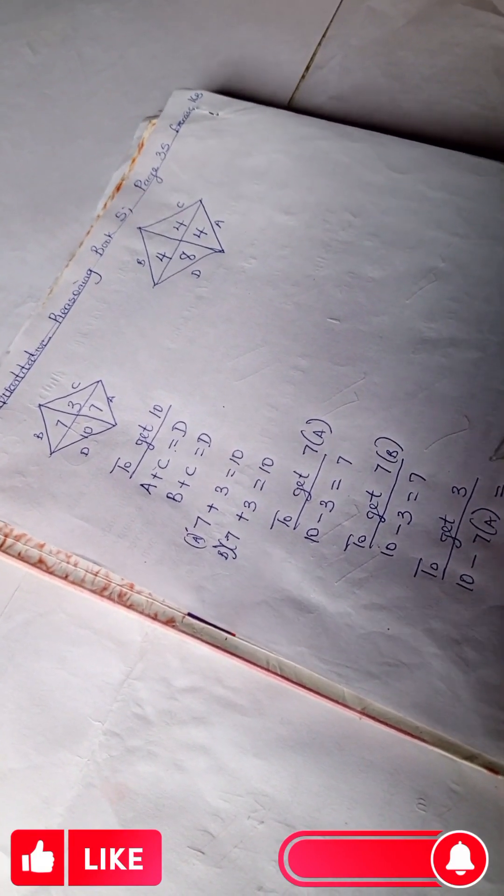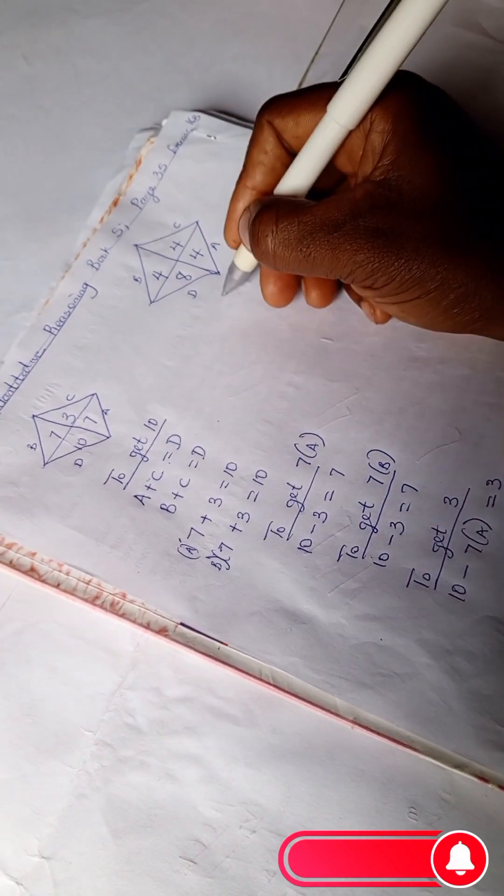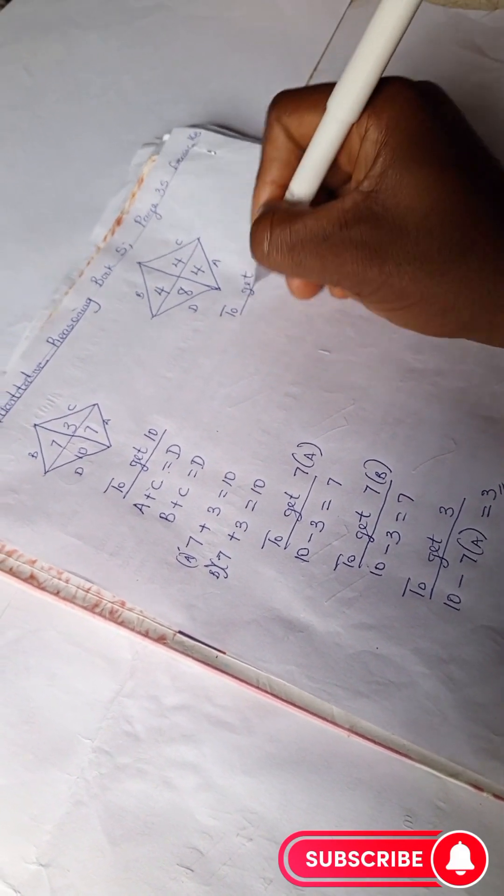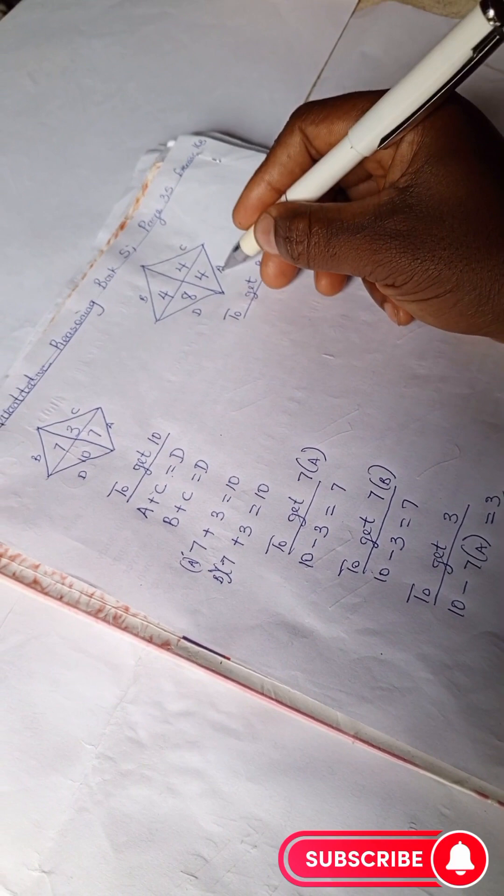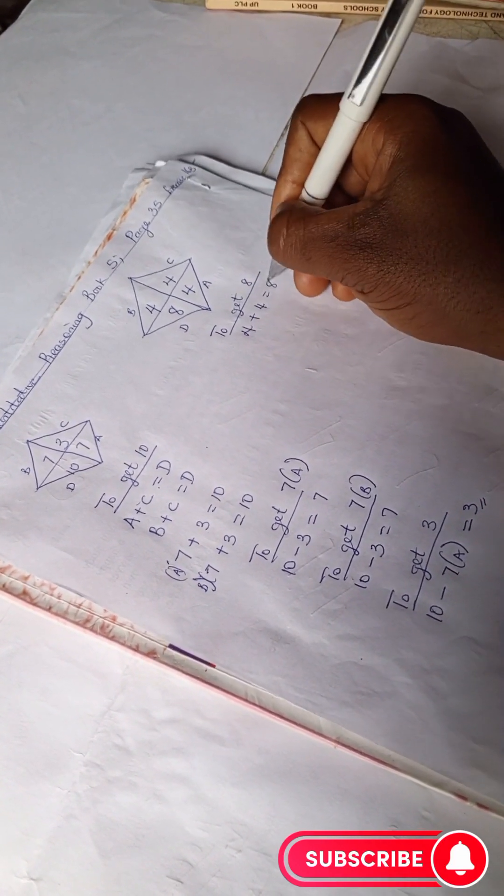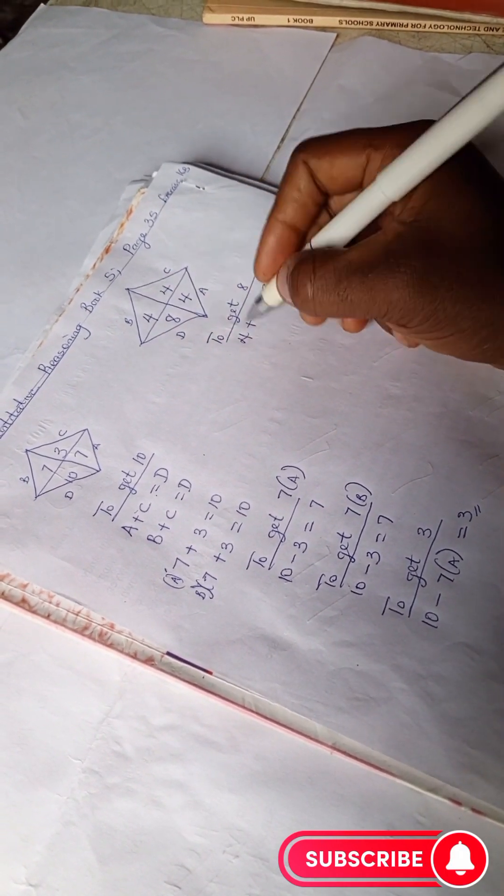Right, so let us try this. To get eight, we can as well say A plus C, that's four plus four equals eight. And if you do it the other way, B plus C, you also get eight.